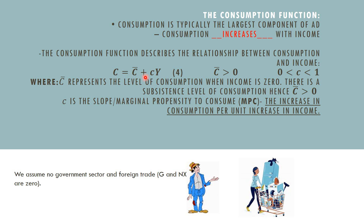We can see it's a positive relationship, showing that consumption rises as income rises. The nature of that relationship is given by little c — that's the slope of the consumption function. It's called the marginal propensity to consume, or the tendency to consume out of income. So if little c is 0.8, it means that if income were to rise by one rand, consumption would rise by 80 cents, or 0.8 of that one rand.